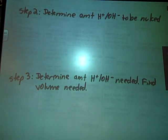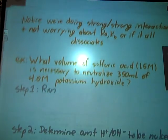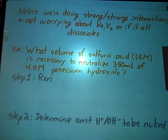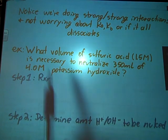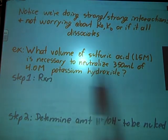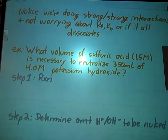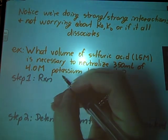Let's see if I can get another example in. Notice we're worrying about strong, strong interactions, and we're not worrying about that KA or KB, or if it all dissociates thing. That comes in the equilibrium chapter, which we will do at a later date. For now, we're just thinking about strong, strong interactions. Let's see if we can buzz through this problem real quick. What volume of sulfuric acid is necessary to neutralize 350 mL of a 4 molar HCl solution? Step 1, same old, same old. We need an equation.